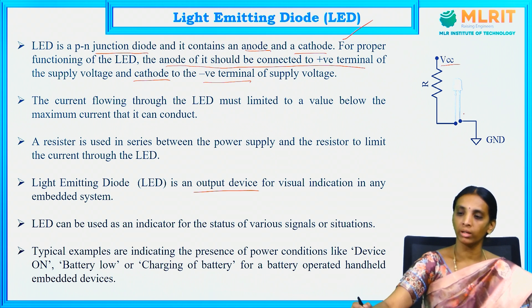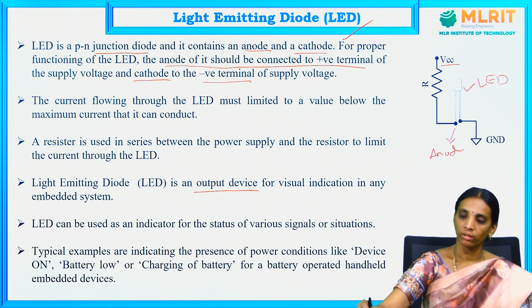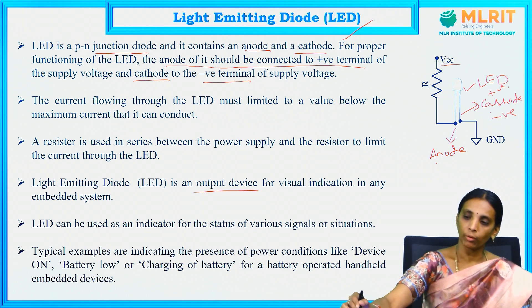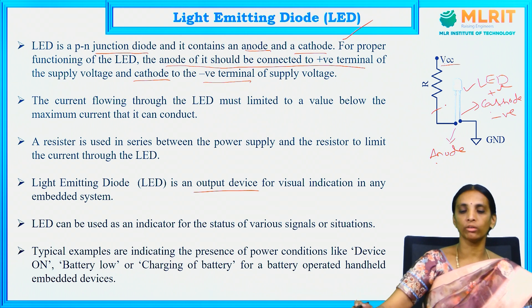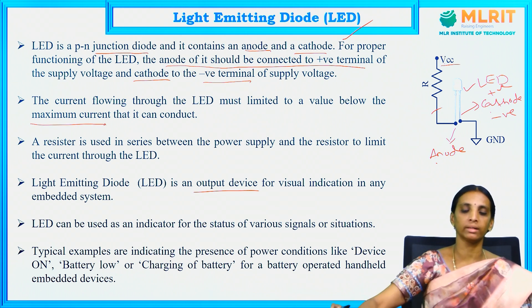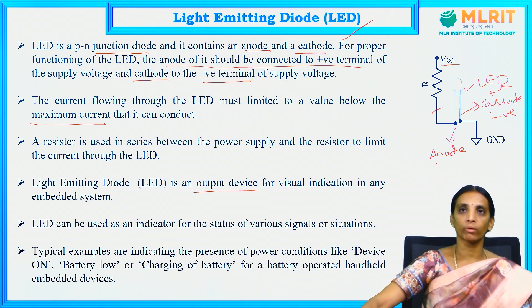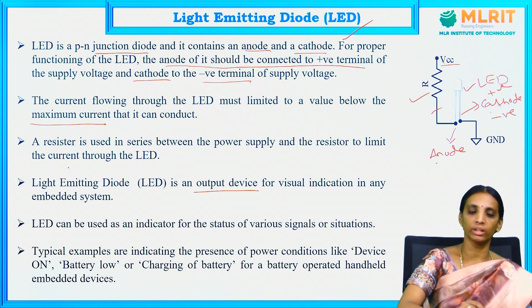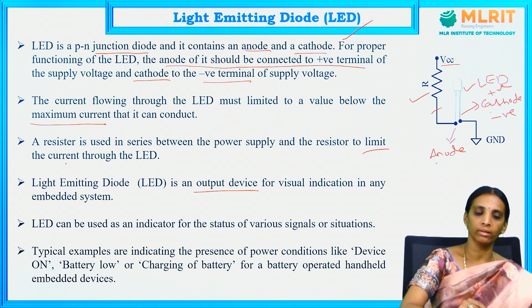If you observe the diagram, the longer lead of the LED indicates the anode and the shorter lead indicates the cathode. VCC is connected to the anode and ground is connected to the cathode — positive to anode and negative to cathode. The current flowing through the LED must be limited to a value below the maximum current it can conduct. To limit this maximum current, a resistor is connected in series with the LED.